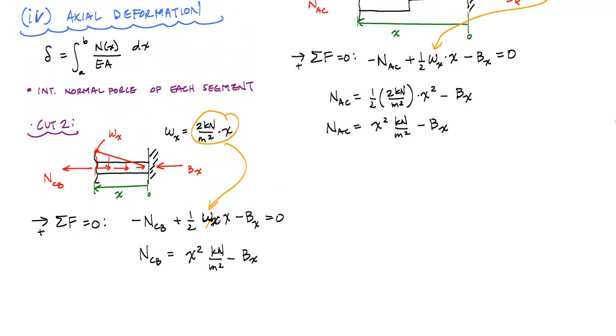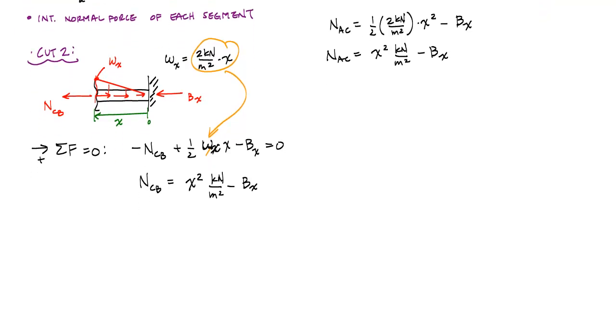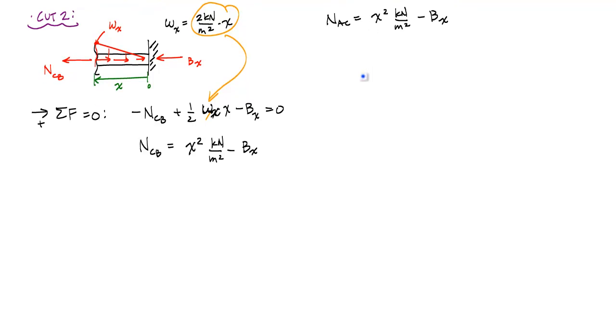So now I am ready to set up and plug these displacements in my compatibility equation. And so in my compatibility equation, if you recall, my compatibility equation looks like this. This is saying that here, with this substitution, I would have from some bound, from somewhere to somewhere, I would have NAC dx, because this normal force in segment AC is a function of x, over EA_AC, plus the integral from some bounds NCB dx over EA_CB. All this equals 0 here.